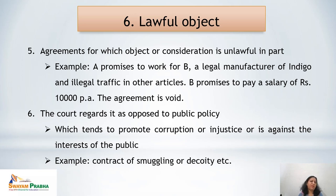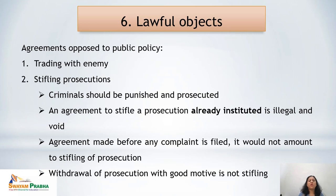The last category under lawful object is when the court regards the agreement as opposed to public policy. If the court has regarded an activity as opposed to public policy, the contract is not enforceable. Acts opposed to public policy include things that promote corruption or injustice or are against the interest of the public, such as contracts involving smuggling. The first act considered opposed to public policy is trading with an enemy — that is, trading with an enemy country.